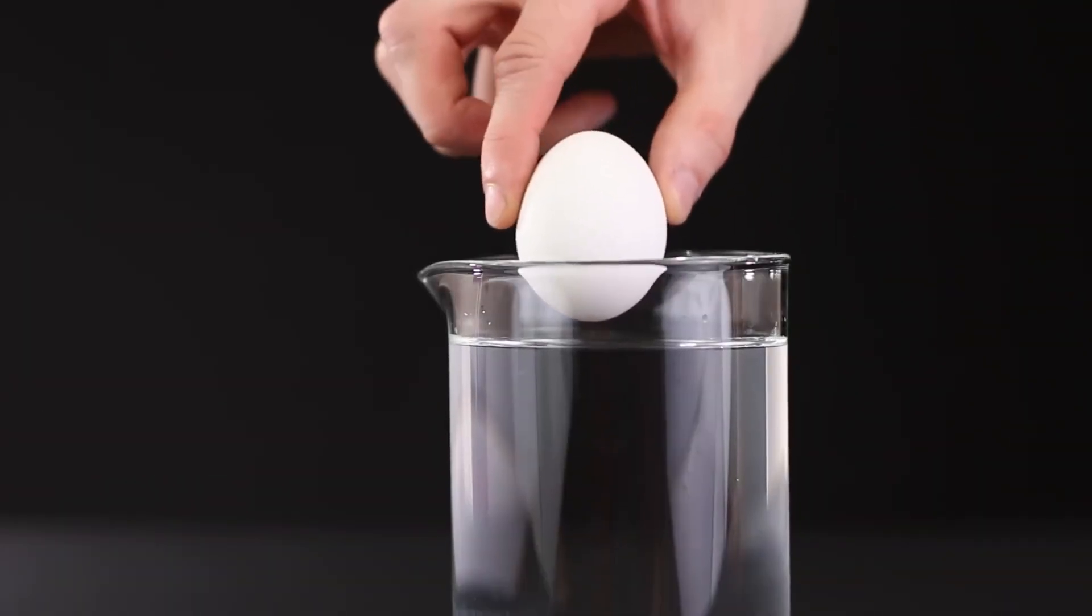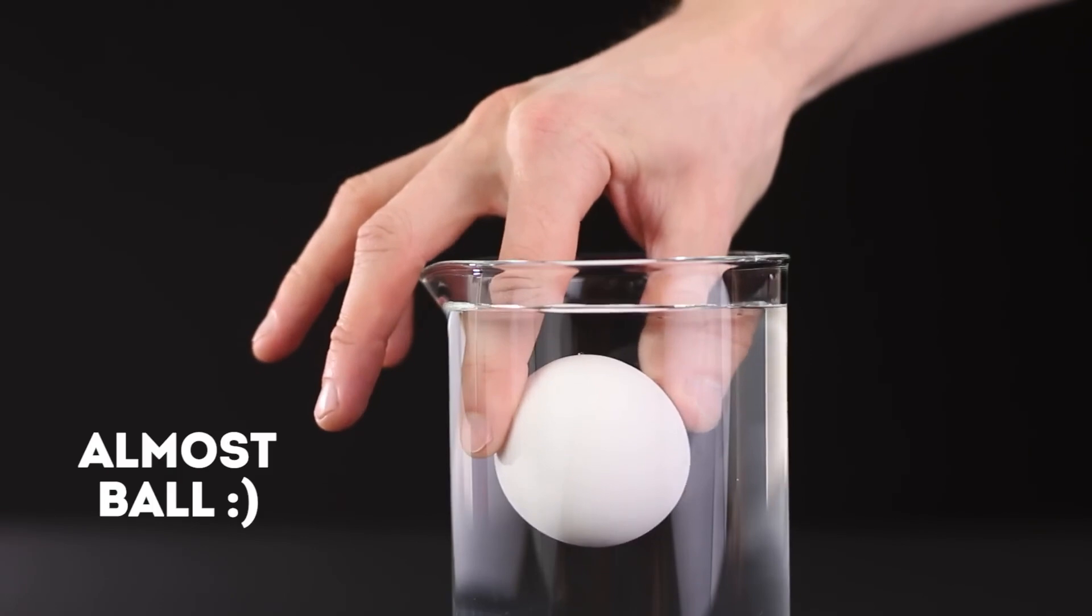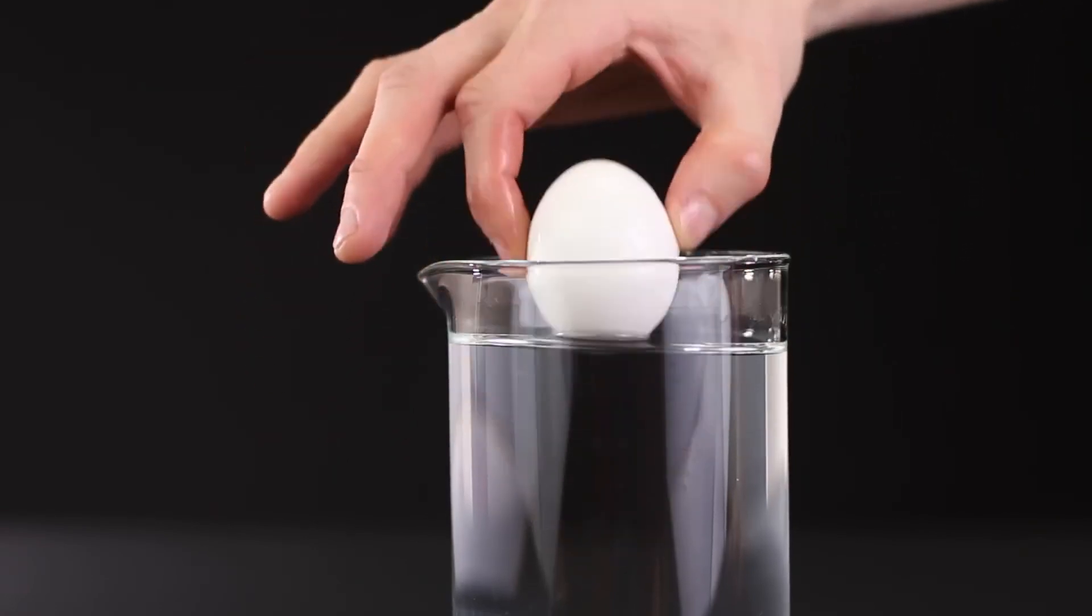Now, we need a glass vessel in the shape of a cylinder. Look, the egg looks just like a ball. And this refraction of light? Okay, let's be serious.